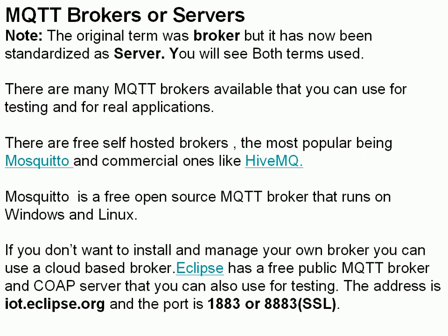MQTT brokers — the original term was broker but it has been standardized as server, so you'll see both terms used. There are many MQTT brokers available for real applications and for testing. The most popular free self-hosted broker is Mosquitto, which runs on both Linux and Windows and is written in C. There are also commercial brokers like HiveMQ. If you don't want to manage your own broker, you can use cloud-based brokers — Eclipse has one available at iot.eclipse.org, working over port 1883 or port 8883 for secure connections.